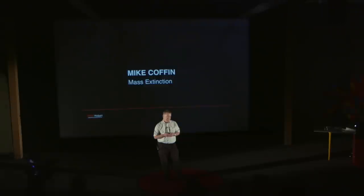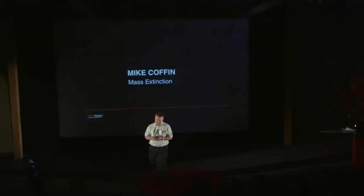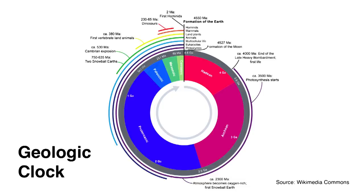What I'm going to do next is take you through a brief history of the 4.6 billion years of Earth and highlight a few of the major events. This is a geological clock meant to represent the 4.6 billion years of Earth history so far. It's estimated that the planet will survive for another 5 billion years before the sun consumes us as it expands into a giant.